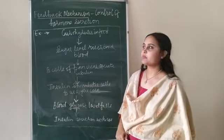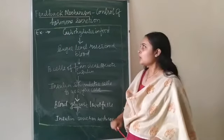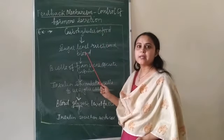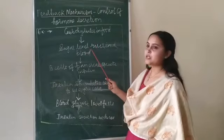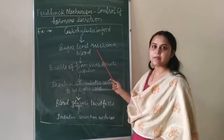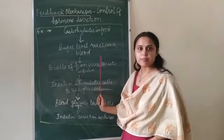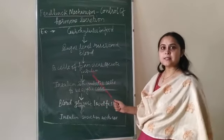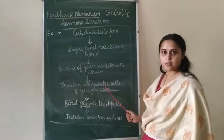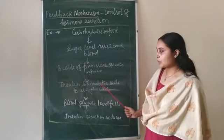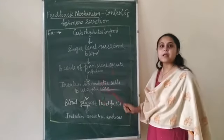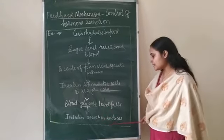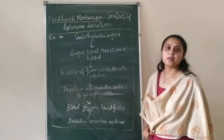Let's understand this with an example. When we eat carbohydrates in our food, the level of sugar in the blood increases. This increased blood sugar level is detected by beta cells of the pancreas, which then release insulin. Insulin further stimulates the cells to use up the glucose. Once the cells absorb the glucose, the blood glucose level decreases, and the insulin secretion also gets reduced.